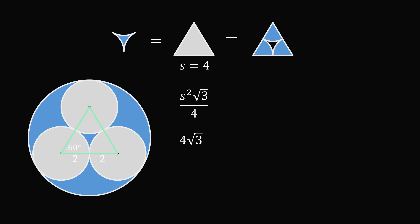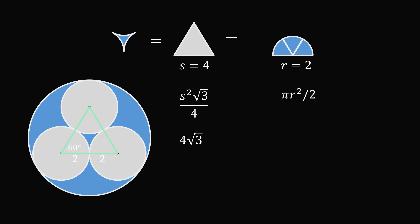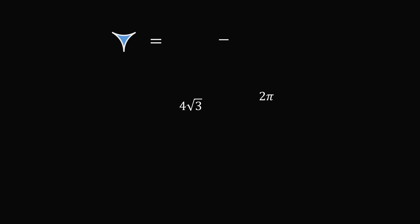We now need to calculate the total area of the three circular sectors. Since each circular sector has a central angle equal to 60 degrees, three of them together will form a central angle of 180 degrees. In other words, this is equivalent to the area of a semicircle with radius equal to 2. So this will be equal to pi r squared divided by 2, and that is equal to 2 pi. So the area that's in between the three small circles is equal to 4 times the square root of 3 minus 2 pi.